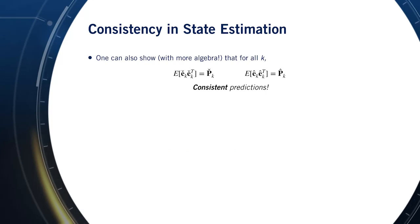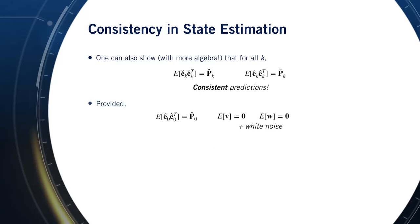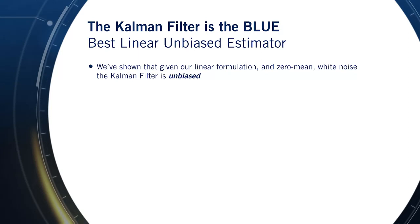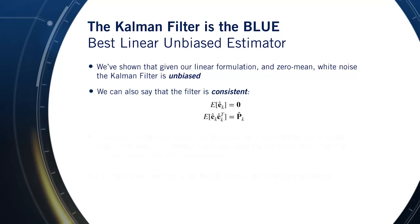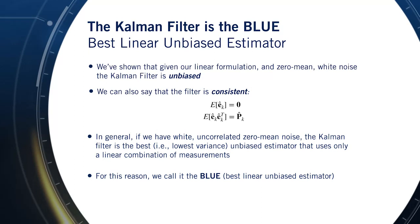Showing the consistency property formally is outside the scope of this course, but it is indeed true for a Kalman filter. So long as our initial estimate is consistent and we have white zero-mean noise, then all estimates will be consistent. Putting everything together, we've shown that given white, uncorrelated, zero-mean noise, the Kalman filter is unbiased and consistent. Because of these two facts, we say the Kalman filter is the BLUE — the best linear unbiased estimator — producing unbiased estimates with the minimum possible variance.